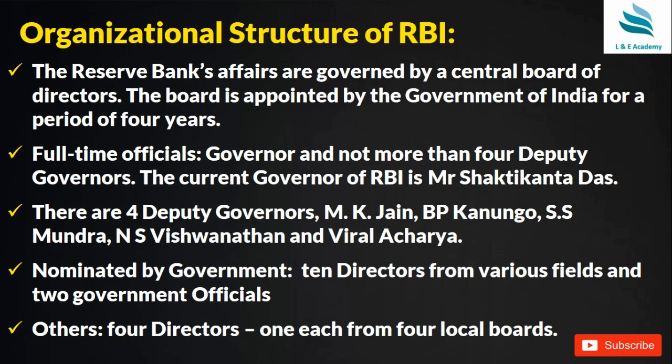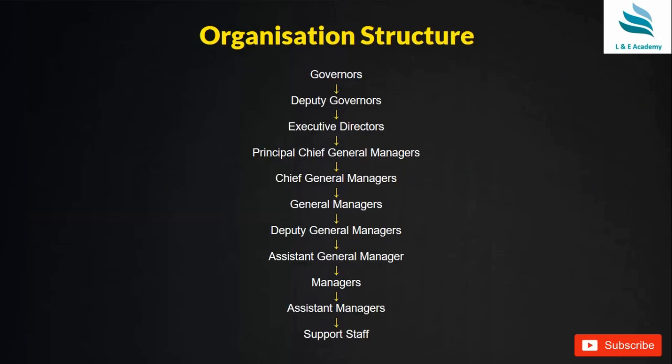The Reserve Bank's affairs are governed by the Central Board of Directors, appointed by the Government of India for a period of four years. Full-time officials include the Governor and not more than four Deputy Governors. The current Governor of RBI is Mr. Shaktikanta Das, with four Deputy Governors: MK Jain, BP Kanungo, SS Mundra, NS Vishwanathan, and Viral Acharya. Additionally, ten directors from various fields, two government officials, and one director each from four local boards are nominated by the government.